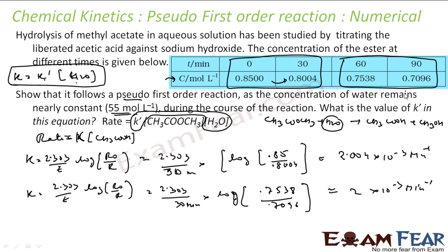That part is done. The next part is we define the value of K dash. The equation we know is K is nothing but K dash into water concentration. K is something which we have found, so K dash will be K by H2O. K dash is nothing but K by H2O from this equation. What is the value of K? 2 into 10 to the power minus 3 per minute, and concentration of H2O is 55 mol per liter. So if you solve this, you get 3.64 into 10 to the power minus 5 moles per liter per minute.